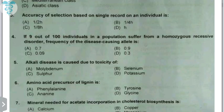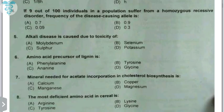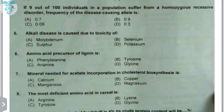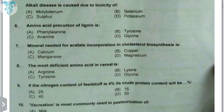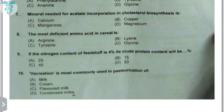Alkali disease is due to toxicity of selenium. The amino acid precursor of lignin is phenylalanine, but the amino acid also required in the synthesis of lignin is tyrosine. The mineral required for acetate incorporation in cholesterol biosynthesis is manganese. The most deficient amino acid in cereals is lysine — actually lysine and threonine, but lysine is the primary answer.